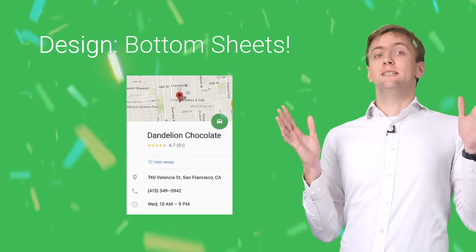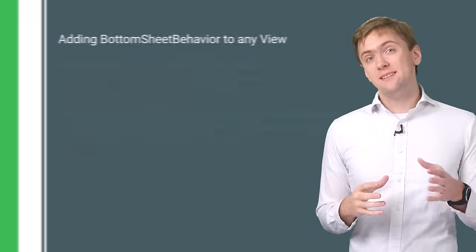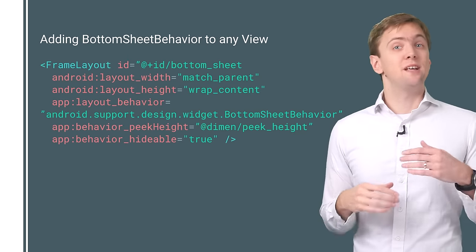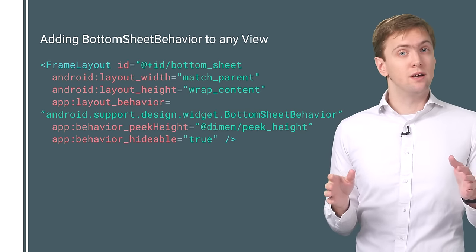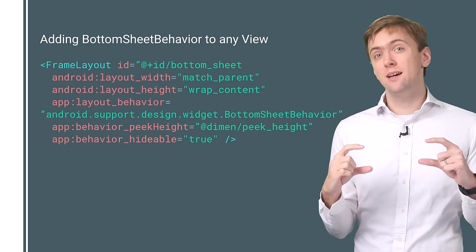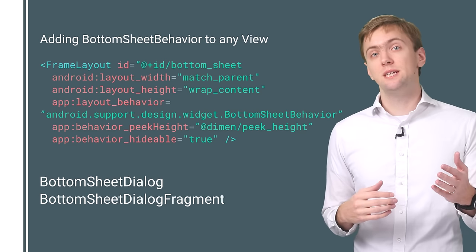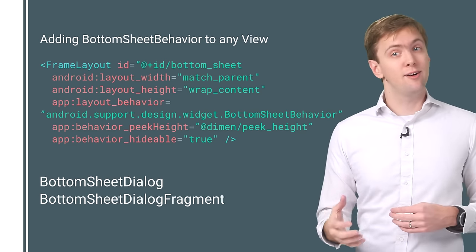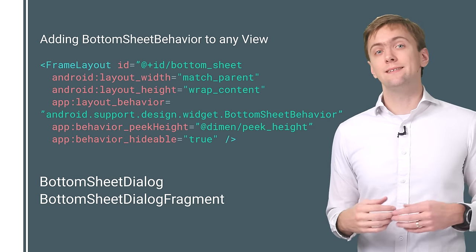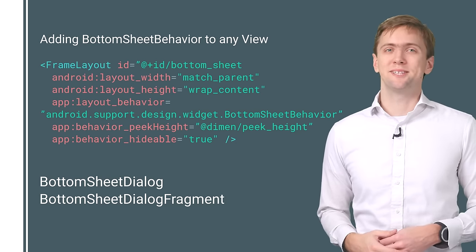Another new feature in 23.2 is the addition to the Android Design Support Library: Bottom Sheets! This Coordinator Layout Behavior attaches to any view, allows you to drag it open and closed, peek, or hide completely. There's even a Bottom Sheet Dialog and Bottom Sheet Dialog Fragment for easily styling a dialog as a bottom sheet. Magical!